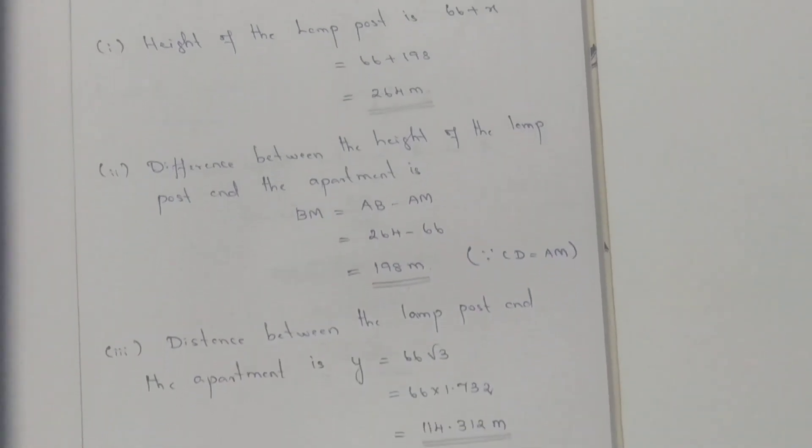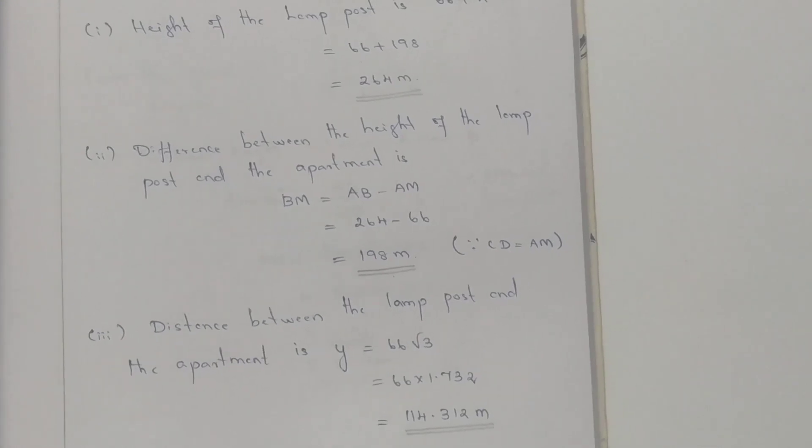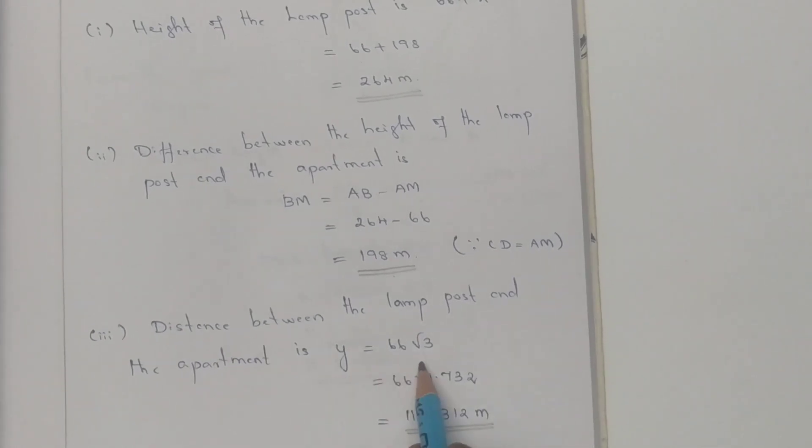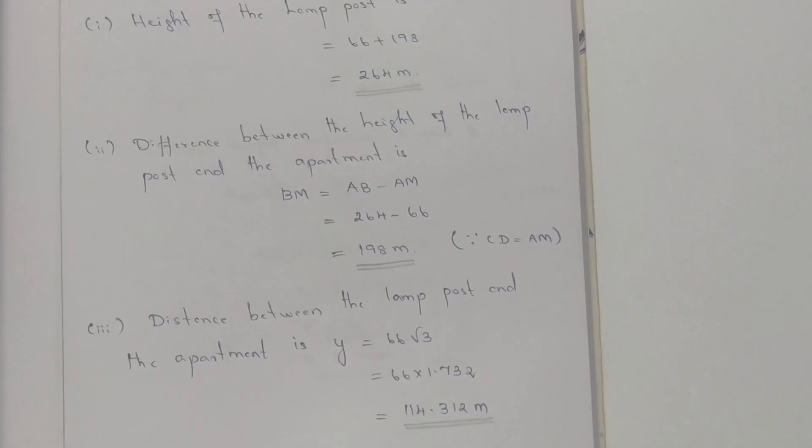The distance between the lamp post and the apartment is Y. Y equals 66 root 3, which is 66 times 1.732 equals 114.312 meters. So these are the three answers.